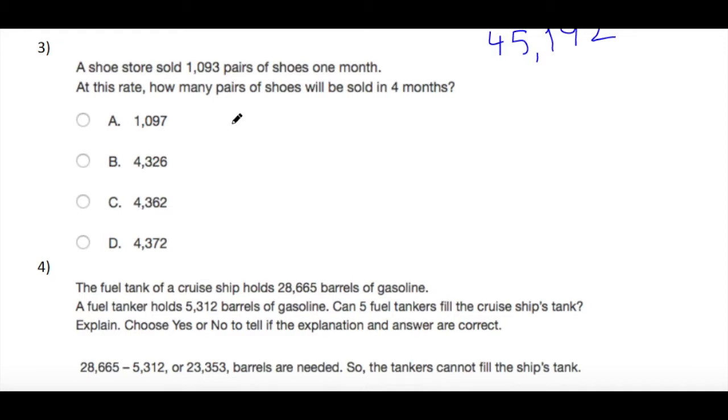Next question: a shoe store sold 1,093 pairs of shoes one month. At this rate, how many pairs of shoes will be sold in four months? We have 1,093 in one month, so in four months it will be 1,093 times 4.